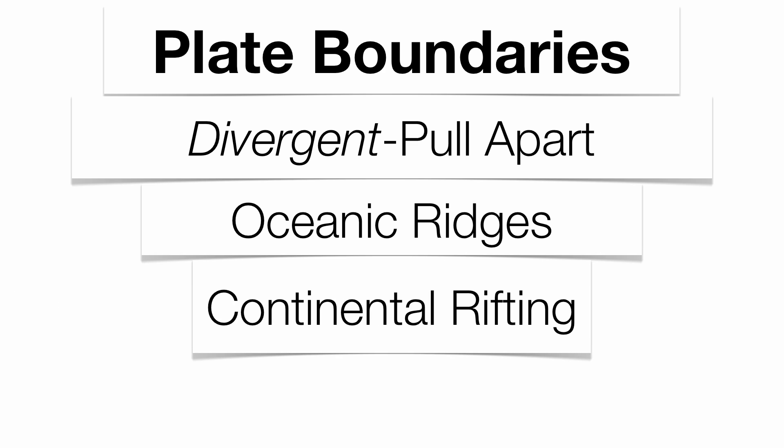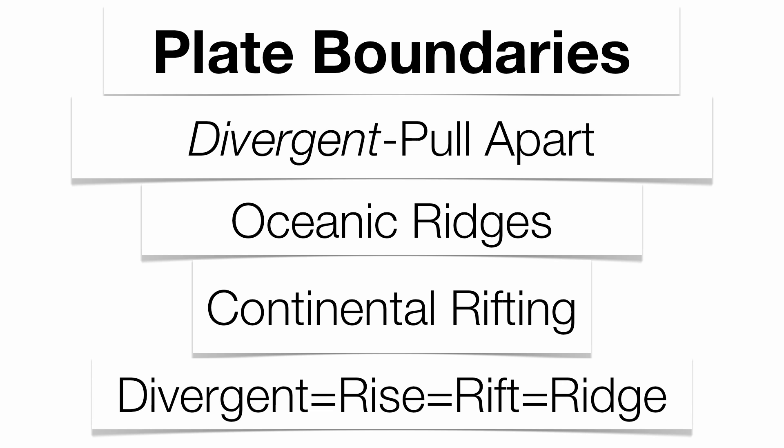Notice there are two different words that mean the same thing — some synonyms: ridge, rift, rise, and divergent. They all mean the same thing: plates moving away from each other.